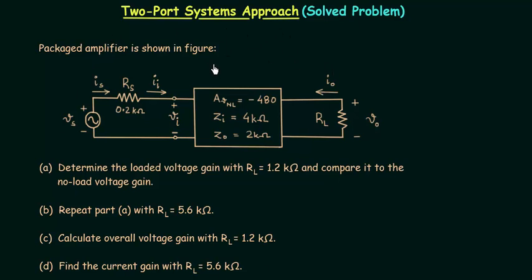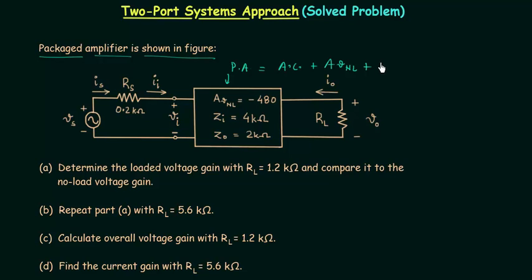You can see the problem on your screen. We have a packaged amplifier as shown in the figure. In the packaged amplifier we have the amplifier circuit plus information about the no-load voltage gain AVNL, the input impedance, and the output impedance. AVNL is equal to minus 480, ZI the input impedance is equal to 4kΩ, and ZO the output impedance is equal to 2kΩ. This information is sufficient to find all required parameters — we do not require the amplifier circuit itself.